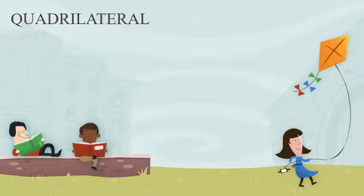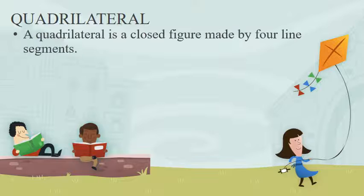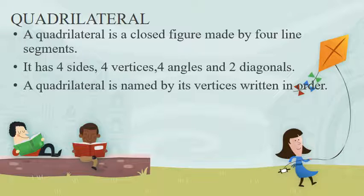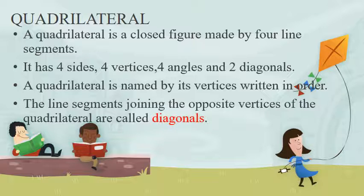After revising triangles, let's move to quadrilaterals. A quadrilateral is a closed figure made by four line segments. It has four sides, four vertices, four angles, and two diagonals. A quadrilateral is named by its vertices written in order. The line segments joining the opposite vertices of the quadrilateral are called diagonals.